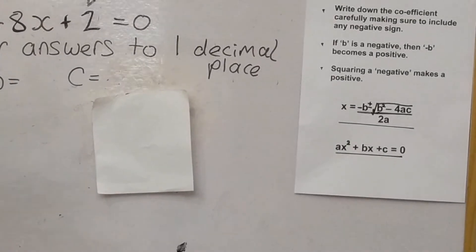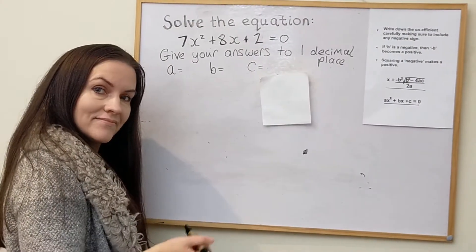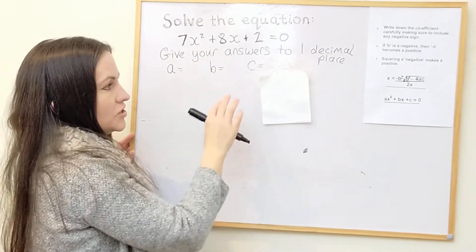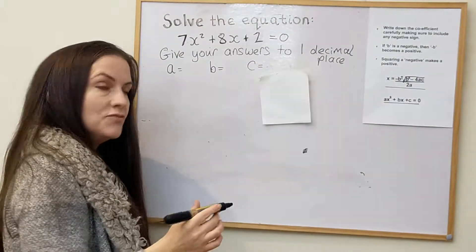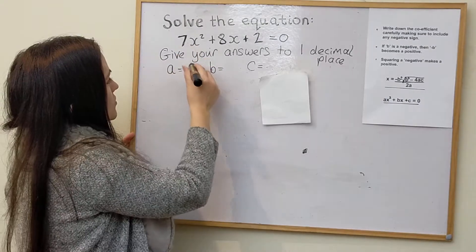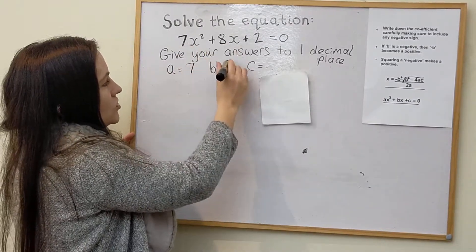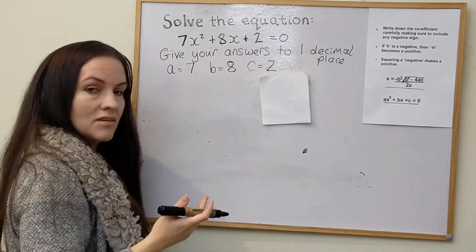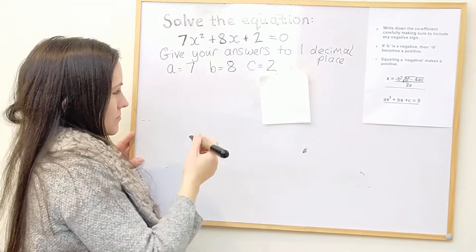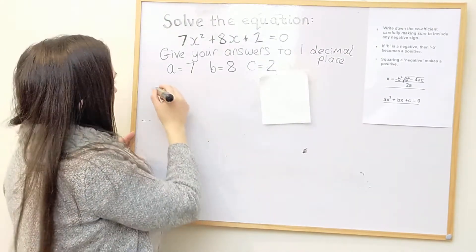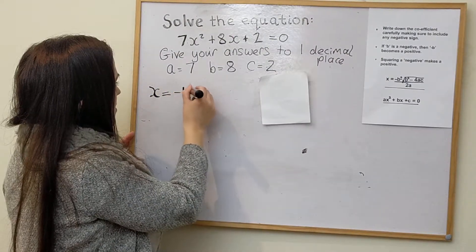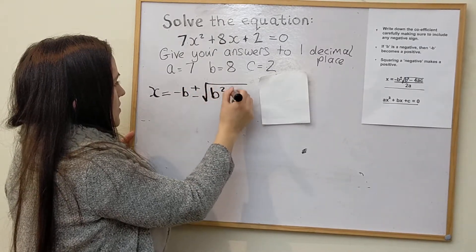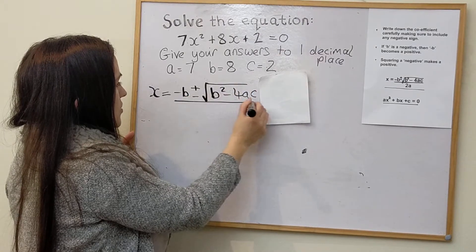Looking at the example — solve 7x squared plus 8x plus 2 equals 0, giving answers to one decimal place — we first write down the coefficients. So a is 7, b is 8, and c is 2. Those are quite simple because there aren't any negatives. The formula is x equals negative b plus or minus the square root of b squared minus 4ac all over 2a.